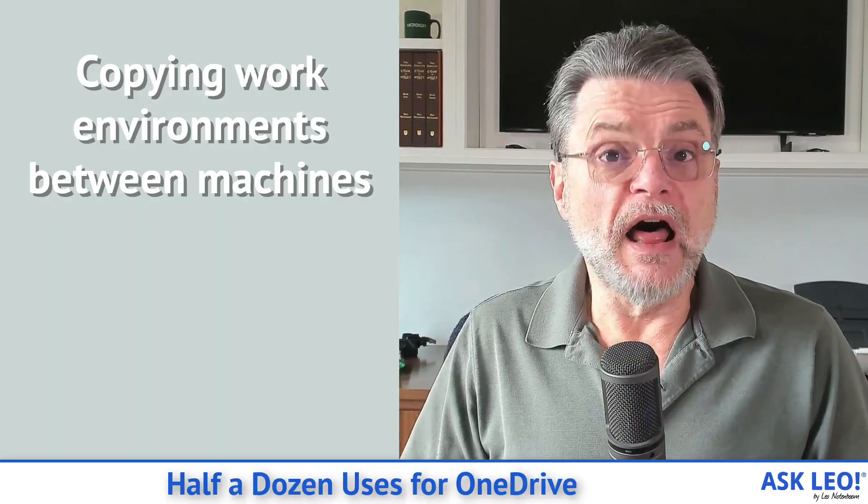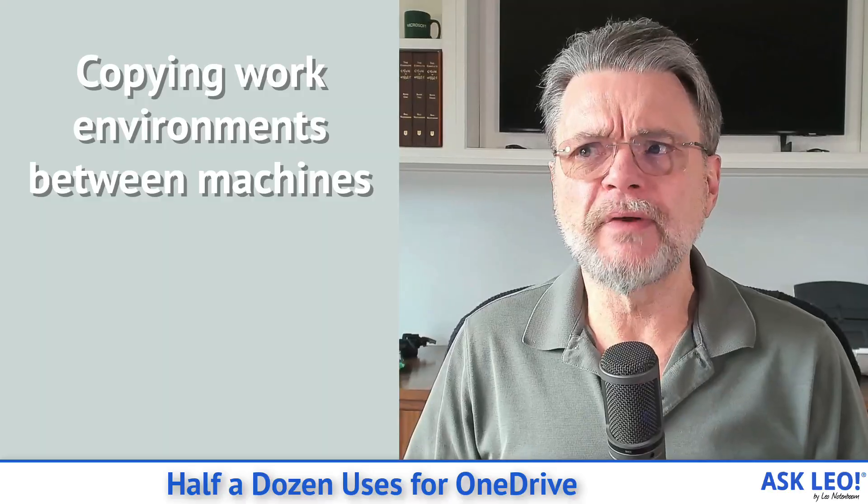Number four: copying entire work environments between machines. A lot of us who do a lot of work on our PCs have what I would call environments. I'll use Word as an example — you may have a set of document templates, documents you refer to all the time. Pile them all into OneDrive subfolders and organize it appropriately. As long as it's within the OneDrive folder, not only will it get copied to the cloud, but it's also getting copied to any number of other machines signed into that same OneDrive account. It's a great way to make sure you've got the same templates, the same documents, the same reference material on all those different machines — a very convenient way to replicate your work environment without having to really think about it.